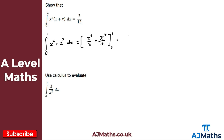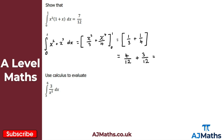Substituting the upper limit with x equal to 1: 1 cubed over 3 is 1 over 3, plus 1 to the 4 over 4 which is 1 over 4. For the lower limit, 0 cubed over 3 and 0 to the 4 over 4 are both 0, so we subtract 0. We just need to simplify 1 over 3 plus 1 over 4: finding a common denominator gives 4 over 12 plus 3 over 12, which equals 7 over 12 — exactly what we wanted to get.